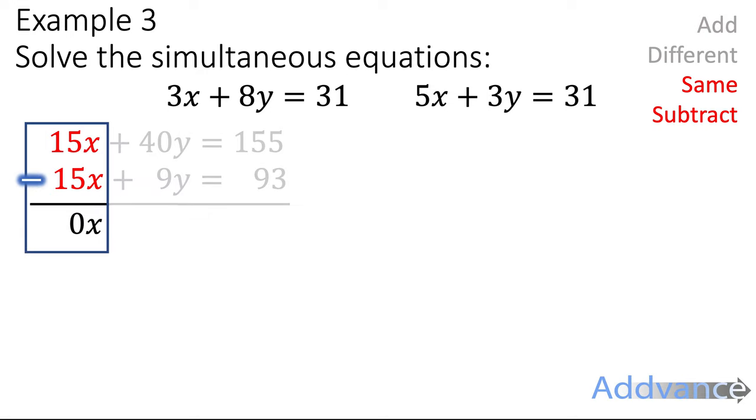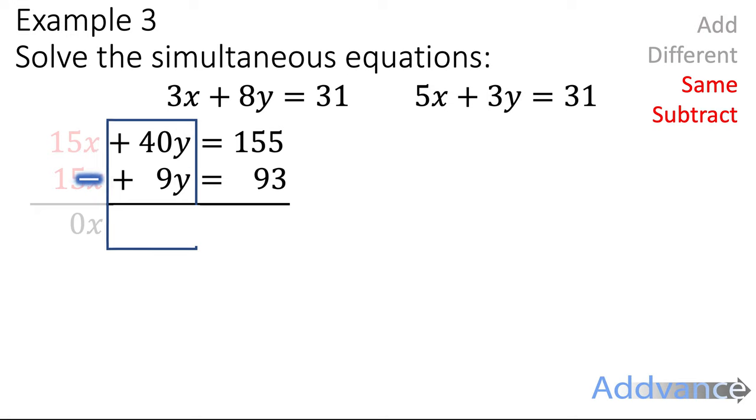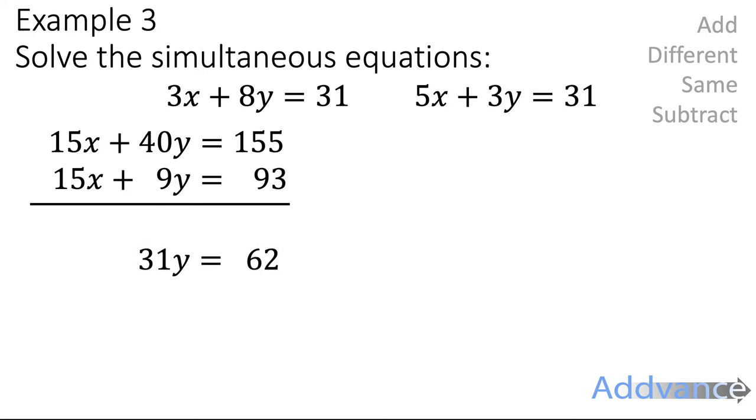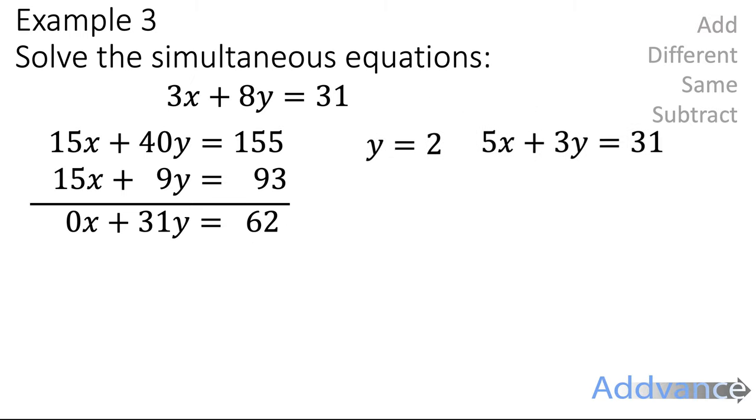Okay. So we subtract 15x minus 15x is 0x. 40y minus 9y is 31y. And 155 minus 93 is 62. Okay. And we've cancelled out the x's. We've now got 31y equals 62. We divide by 31. And 62 divided by 31 is 2.